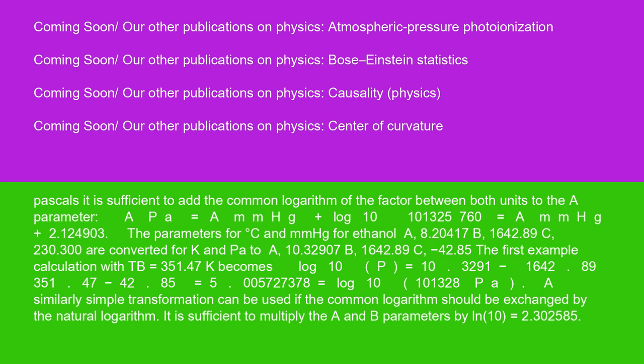The first example calculation with TB equals 351.47K becomes log 10 P equals 10.32907 minus 1642.89 over 351.47 minus 42.85 equals 5.005727378 equals log 10(101328 PA).